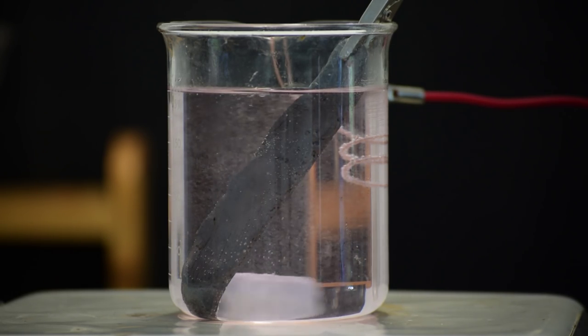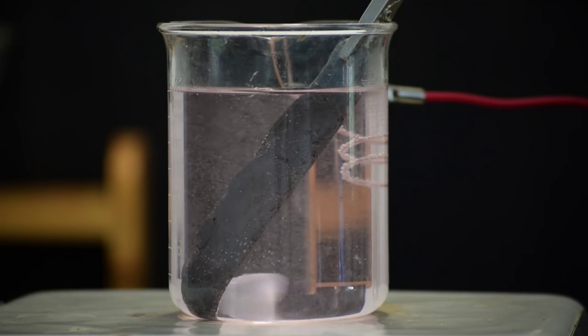When the power is applied, bubbles will begin to come off of each electrode, and the lead electrode will begin to darken as it is coated with lead dioxide.